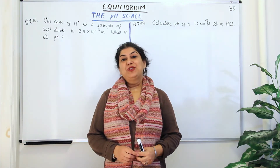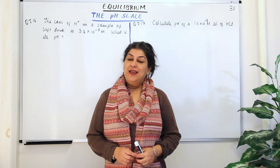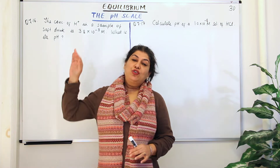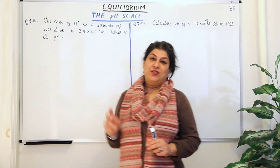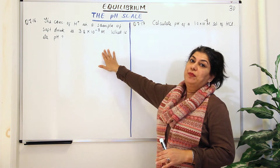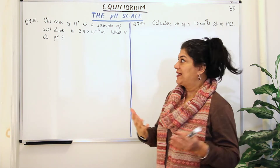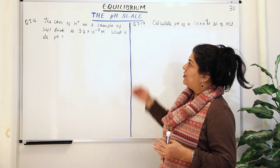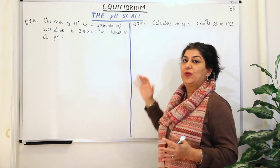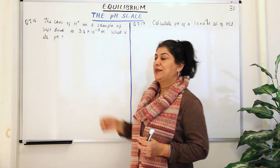I am Seema and welcome to part 30 of the chapter Equilibrium. In this video, I am going to solve two solved examples of the topic the pH scale. Coming straight to the problems, these are questions 7.16 and 7.17 of your NCERT textbook solved examples, just along with the topic the pH scale. I'll explain these two examples to you, which will help you understand the pH scale better.